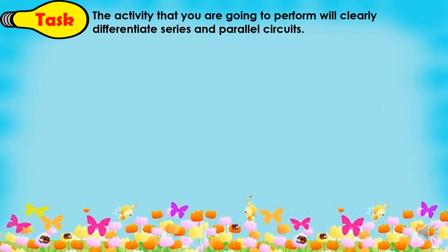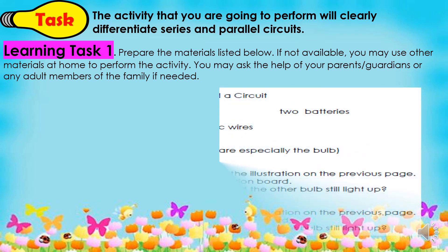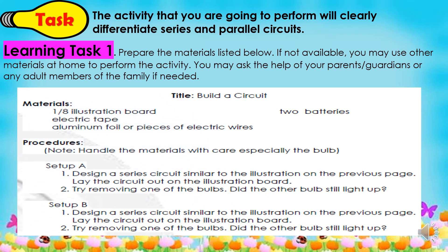For the task, the activity you are going to perform will clearly differentiate series and parallel circuits. For learning task 1, prepare the materials listed below. If not available, you may use other materials at home. You may ask the help of your parents, guardians, or any adult family member if needed. The title of the activity is 'Build a Circuit.' Materials needed: one-eighth illustration board, electric tape, aluminum foil or pieces of electric wire, and two batteries. For setup A, design a series circuit similar to the illustration on the previous page, lay the circuit out on the illustration board, then try removing one of the bulbs and observe if the other bulbs still light up.